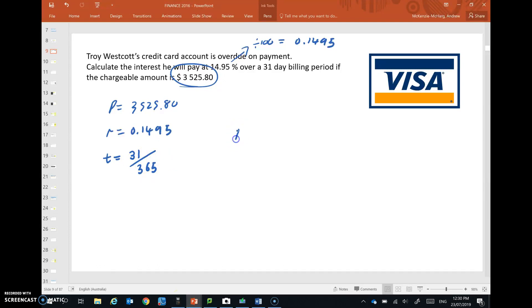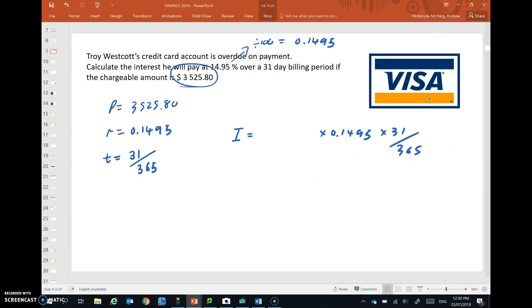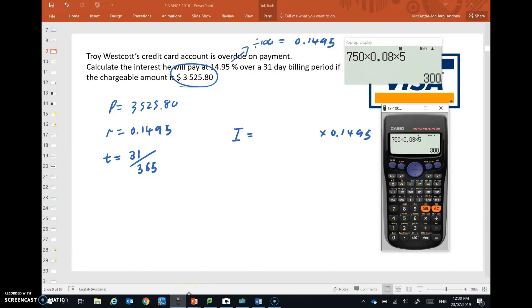So the interest that will be charged is 3525.80 times the interest rate as a decimal times the time in years. Let's see what we get. Okay, that should do the trick.